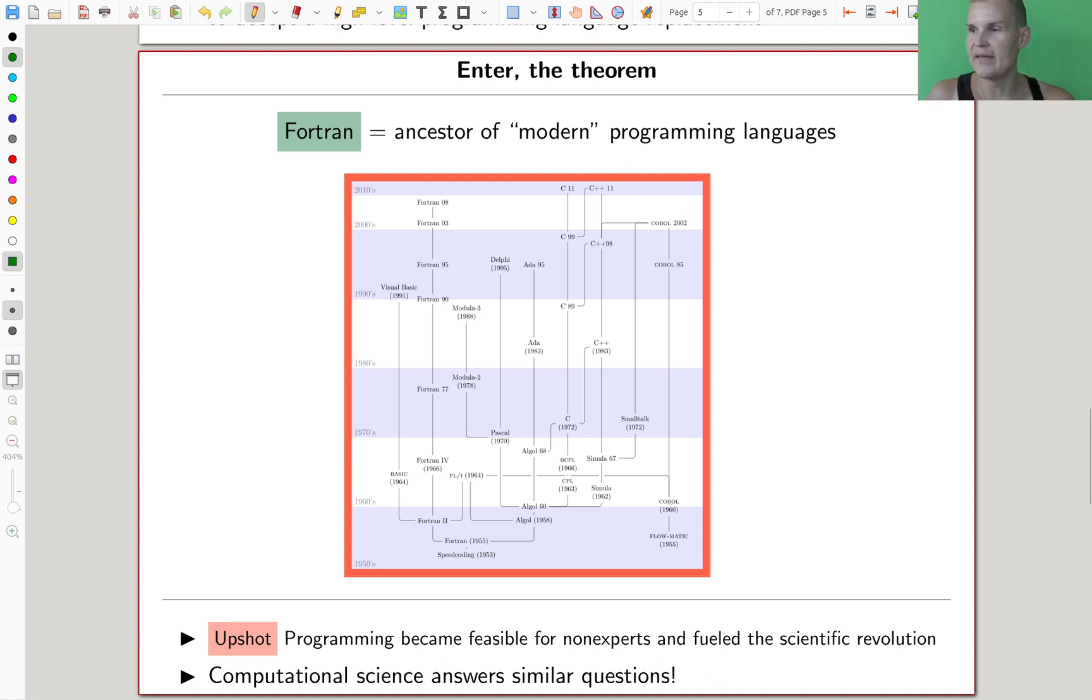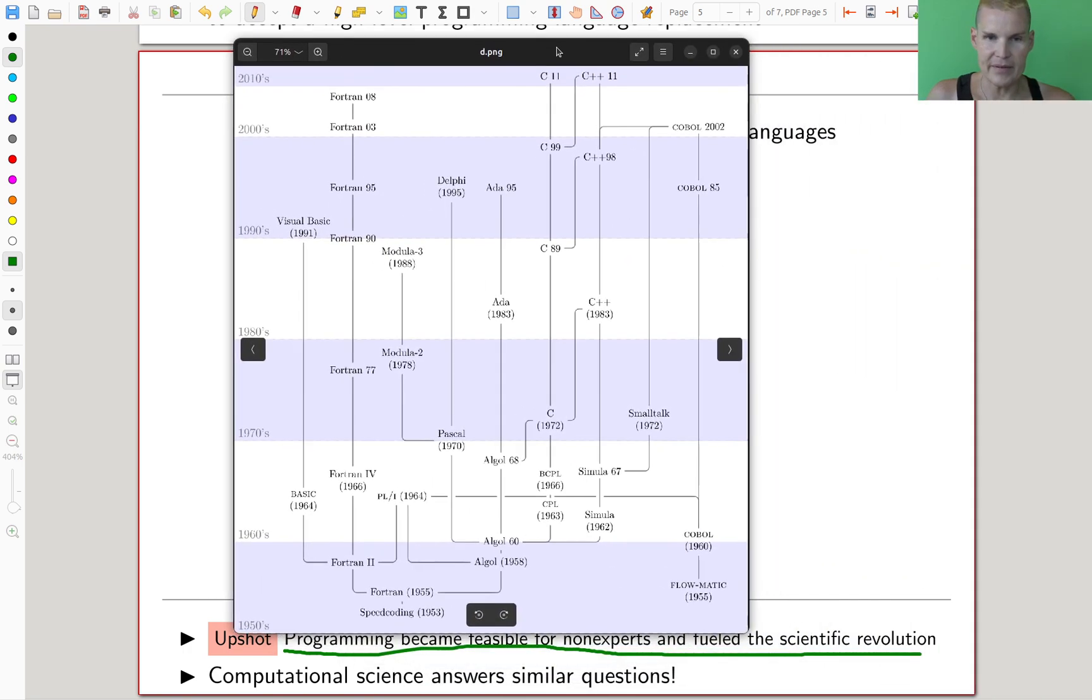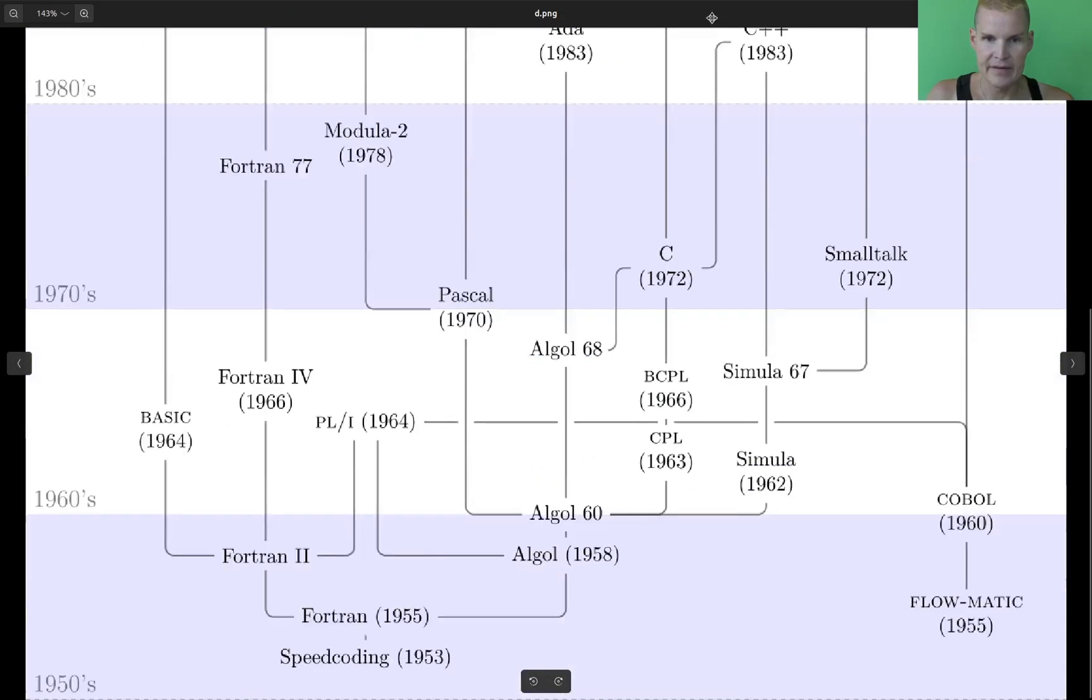In the 1950s, to make computers and programming more accessible - the meta theorem I have for you is that Fortran in some sense was like the ancestor of the modern programming languages, which is really the reason why it became feasible for non-experts and then really fueled the scientific revolution.